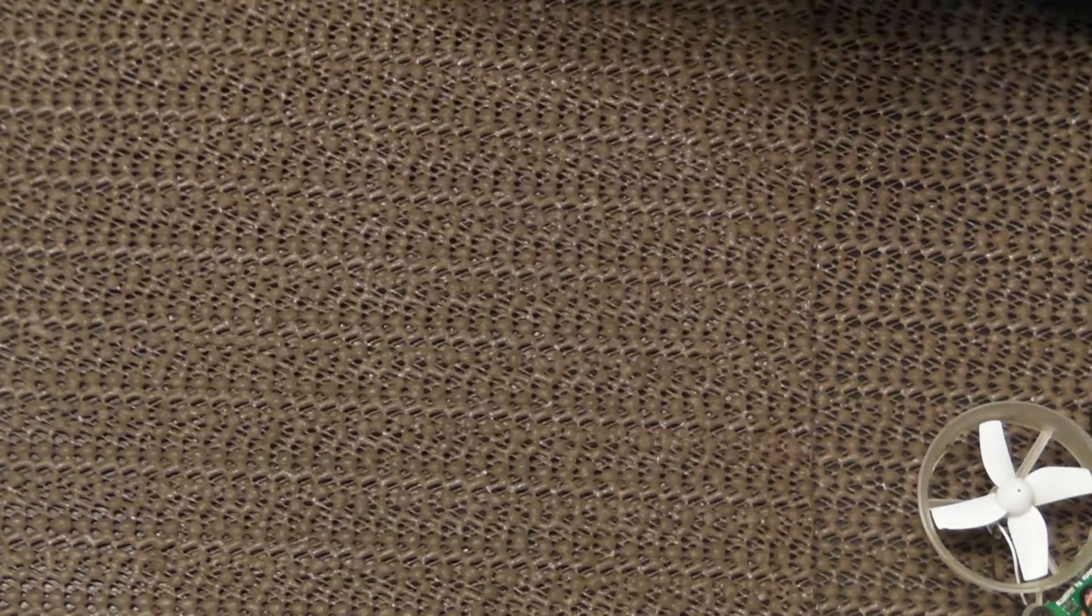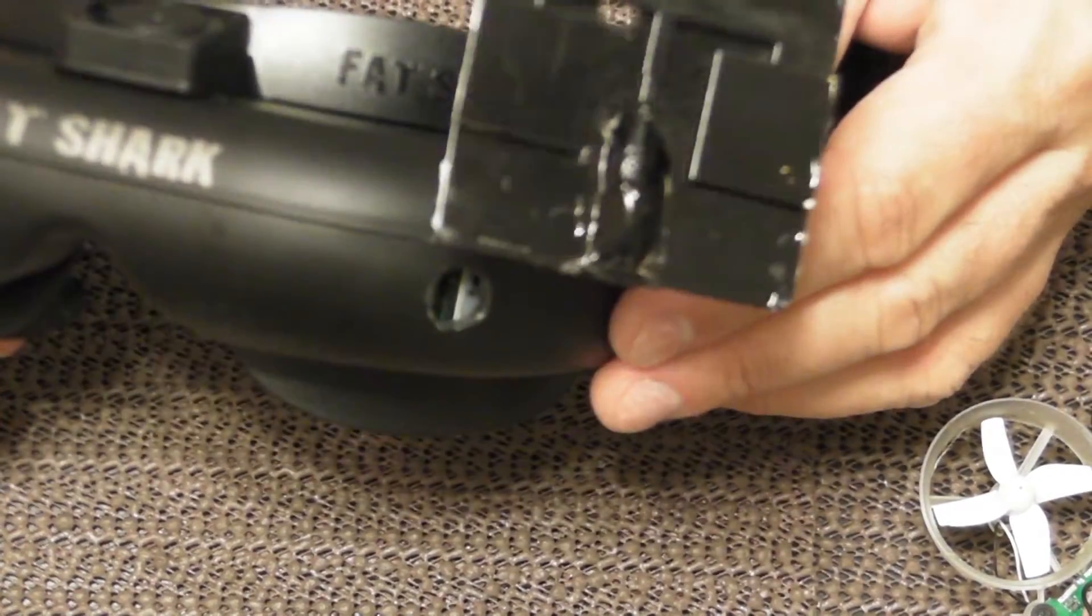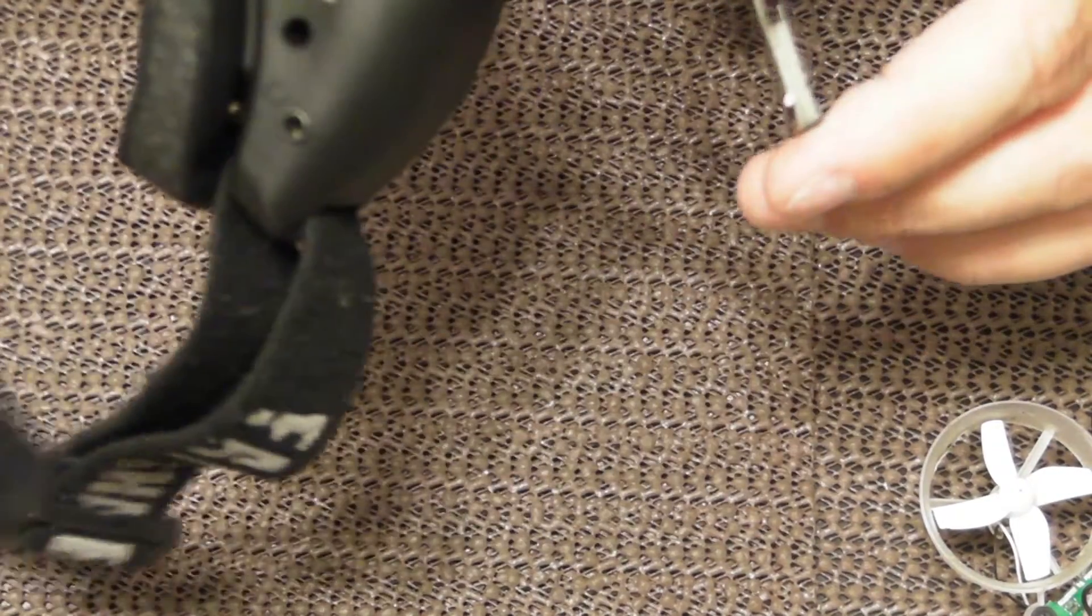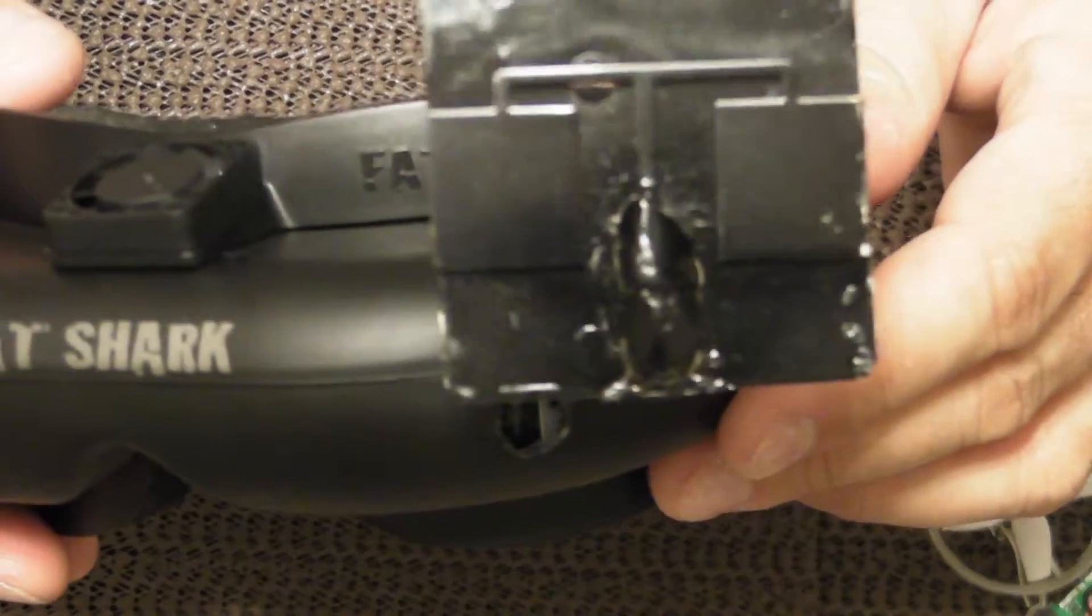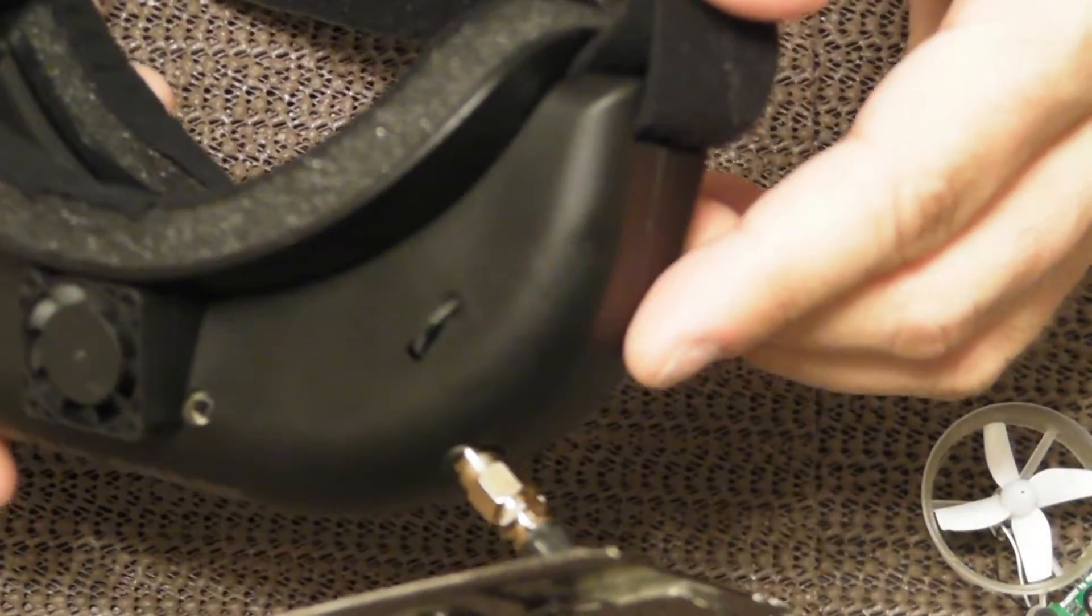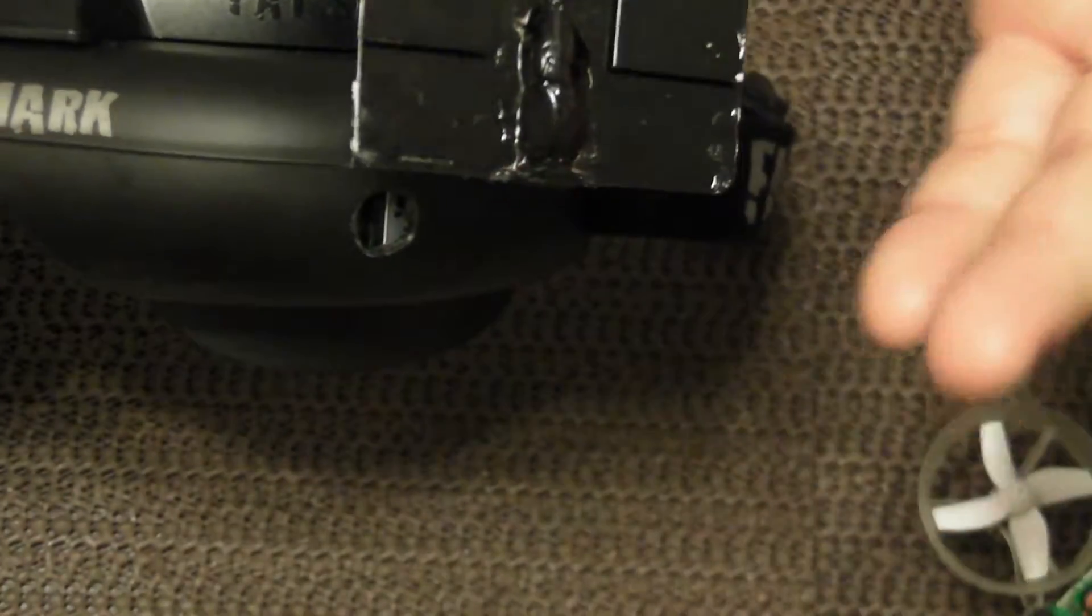On my Fat Shark goggles, I'm using this old inexpensive patch antenna that I bought from China a long time ago for like five bucks. I took the plastic housing off because I wanted to see what was inside of it.